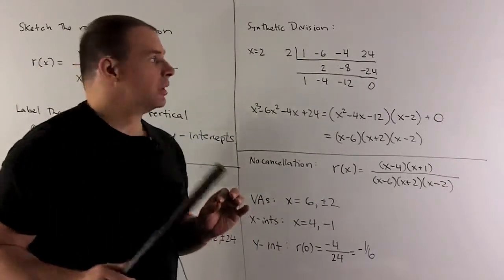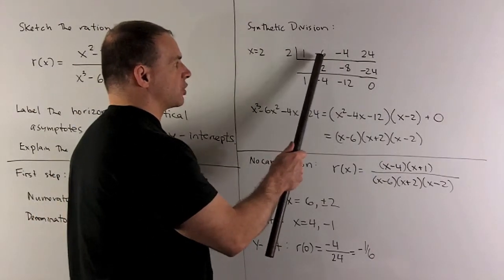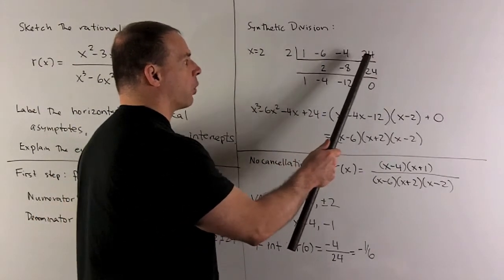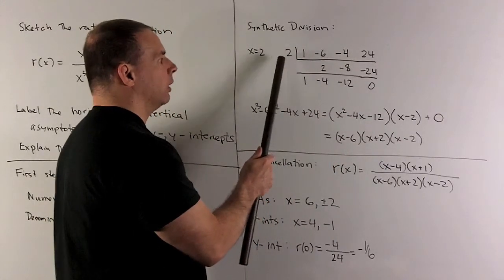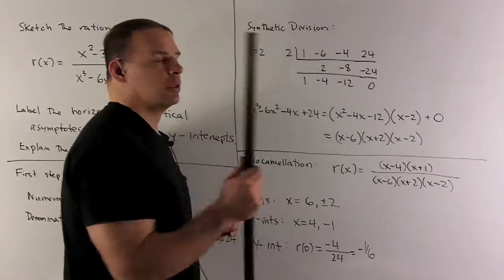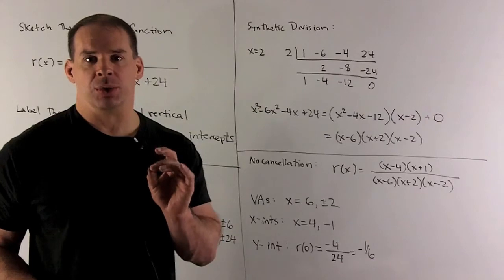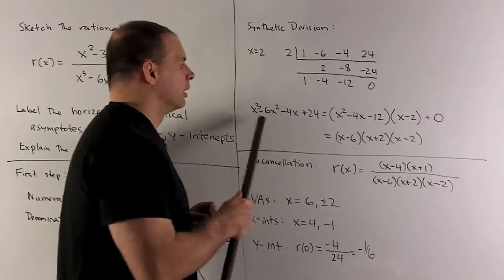Now we interpret. So this says our original polynomial, x cubed minus 6x squared minus 4x plus 24 equals (x - 2)(x squared - 4x - 12) plus a remainder of zero. So that just means x minus 2 divides evenly.